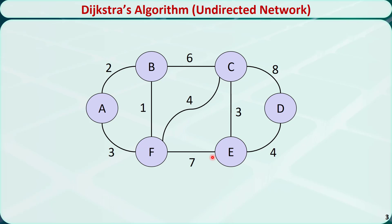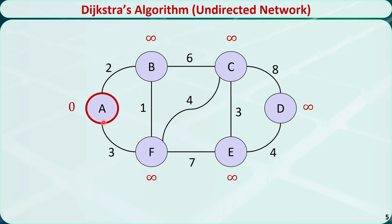The first step is to mark every node with the distance of positive infinity. Now let's start with node A and update the distance. From node A to itself, the shortest distance is 0. Now let's check its neighbors. Node A has two direct neighbors: node B and node F.